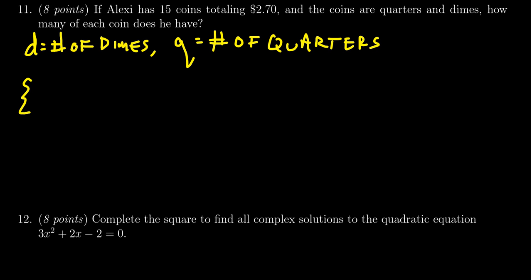So it's a mixture problem. So Alexi has 15 coins total, some of which are quarters, some of which are dimes. So we're going to end up with d plus q is equal to 15.